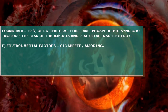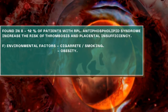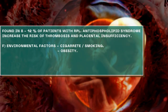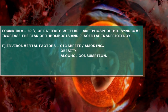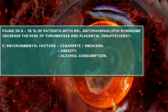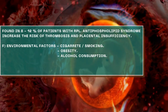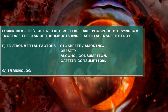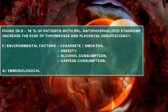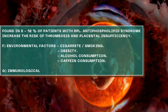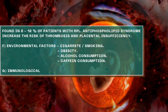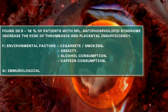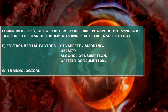Other factors which may cause recurrent pregnancy loss include environmental factors such as cigarette smoking, obesity, alcohol consumption, or high caffeine intake from drinks like energy drinks. Additional factors can be immunological, where the body rejects the pregnancy itself — the uterus contains natural killer cells which fight against pregnancy implantation or growth.